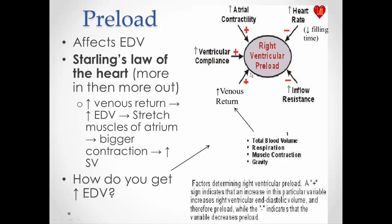Other things that can affect preload are things like ventricular compliance. If the ventricles are a little bit more stretchy, they have higher compliance. Think of compliance as how stretchy the muscle and connective tissue of the ventricles are — the higher the compliance, the more stretchy they are; they're not stiff. So if I can increase ventricular compliance, then I can put more blood in. I can increase end diastolic volume, and that's an effect on preload.